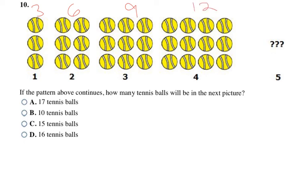I look at the pattern, and it looks like it's adding a row of balls each time, and each row has three in it. So I'm going to try adding three to 12, and that's going to get me 15 in the fifth picture. If I look at my numbers here, each of them increased by three also. Six plus three equals nine. Nine plus three equals 12. So that's definitely my pattern. That definitely makes choice C, 15 tennis balls, my final answer.